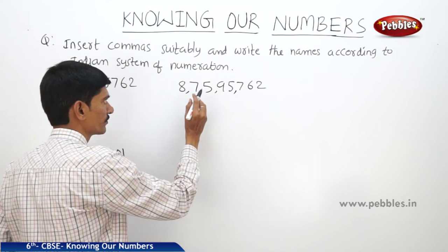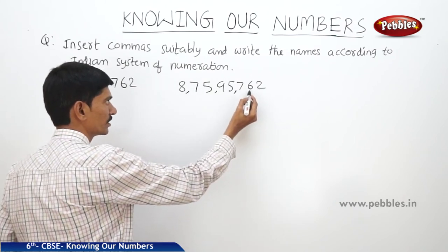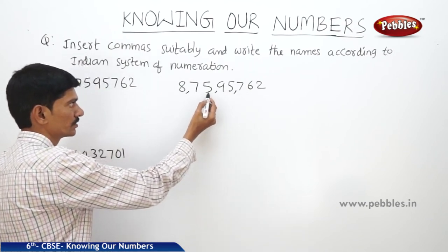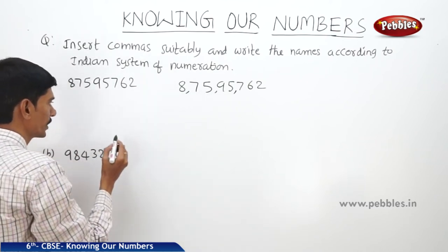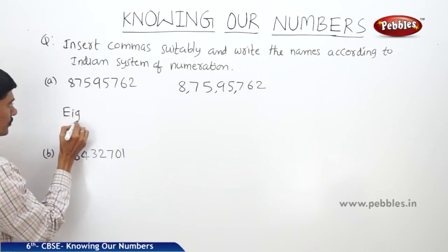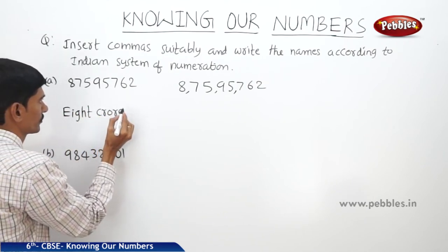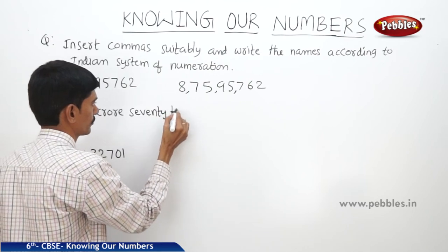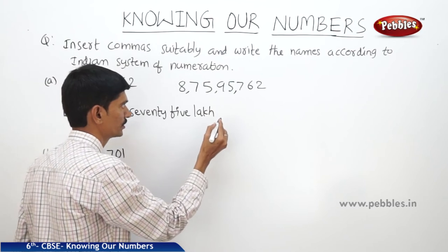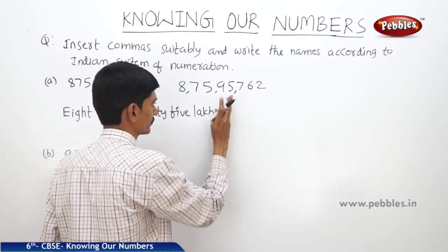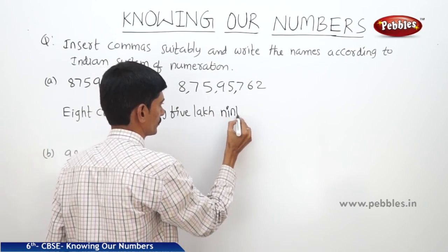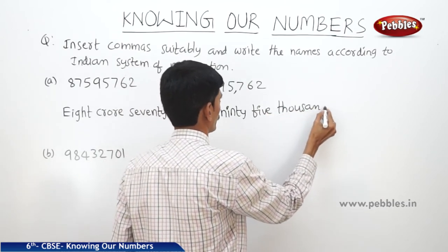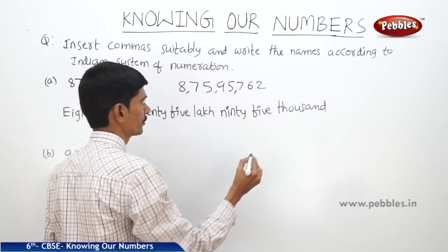So we read the number as: 2 in the 1s place, 6 in the 10s place, 7 in the 100s place, 5 thousands, 9 ten-thousands, 5 lakhs, 7 ten-lakhs, 8 crores. So we write the number as 8 crore, 75 lakh, 95 thousand, 7 hundred sixty-two — that is, 8,75,95,762.